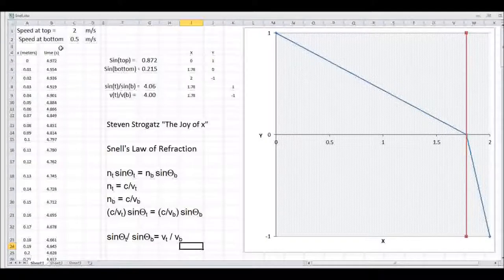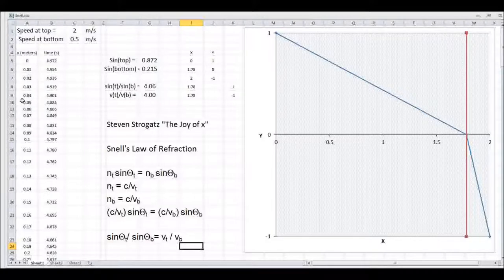And in my analogy with the two fields, this relationship also holds. The sine of the two angles, I've computed the sines here, and the ratio is 4 here, and the ratio of the velocities is 4. There's a slight difference only because I've done small increments of 0.01. If I made my increments 0.0001, it would be pretty much exactly the same.